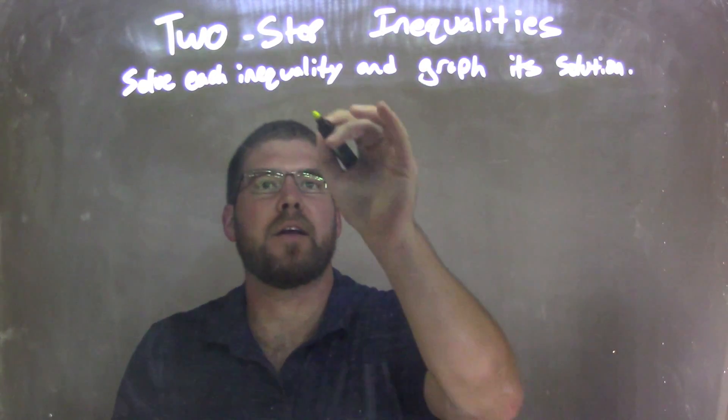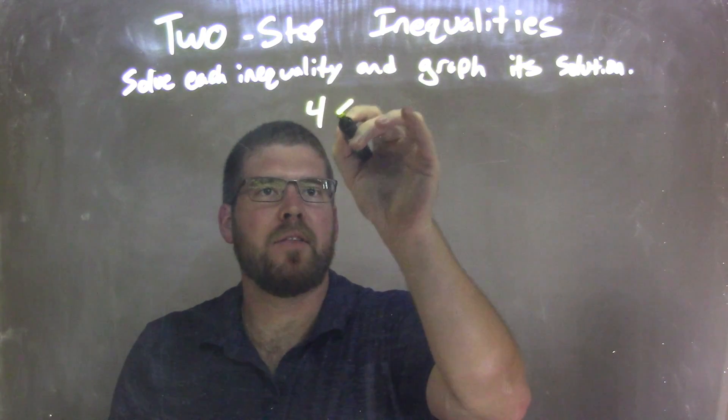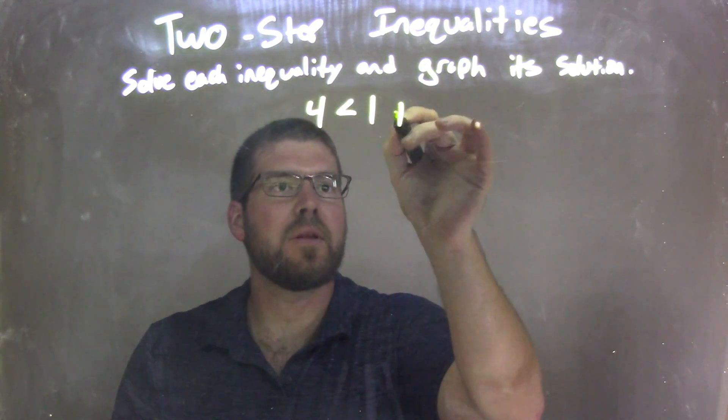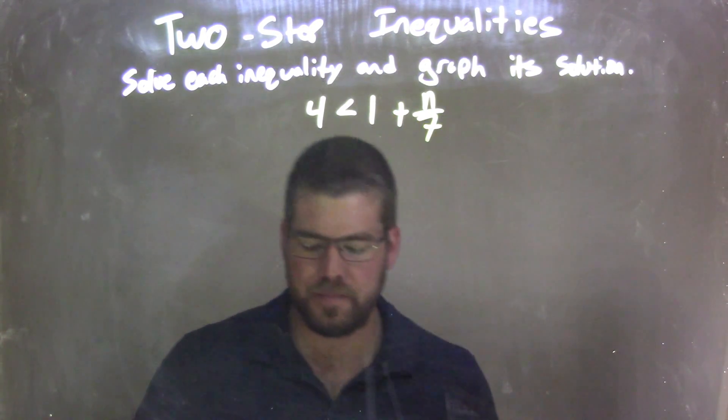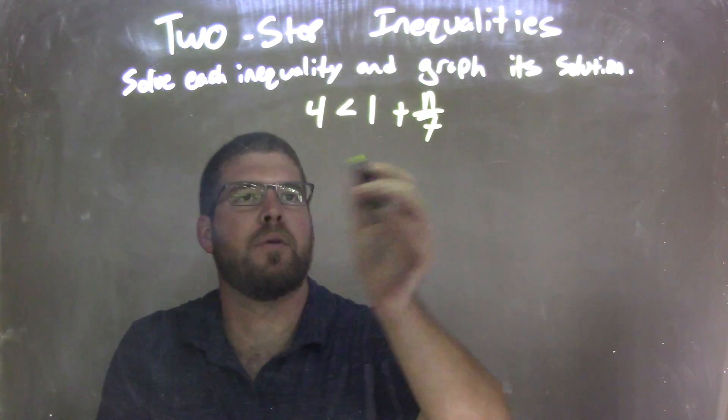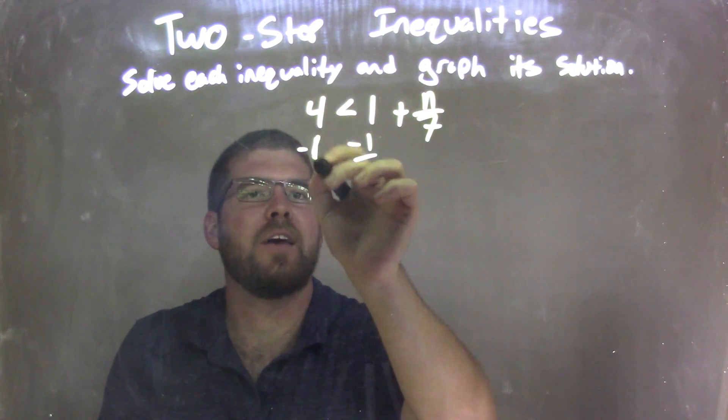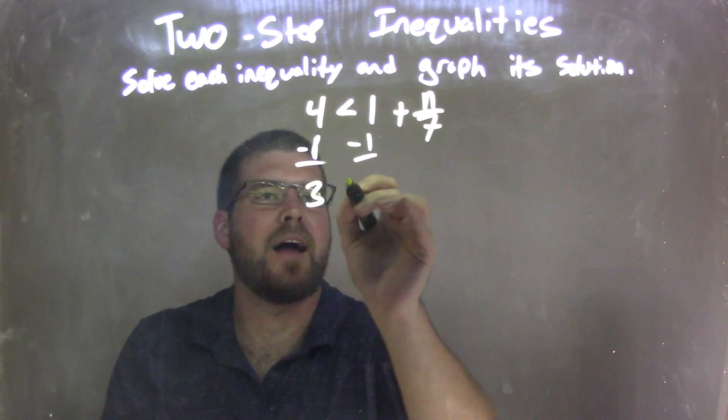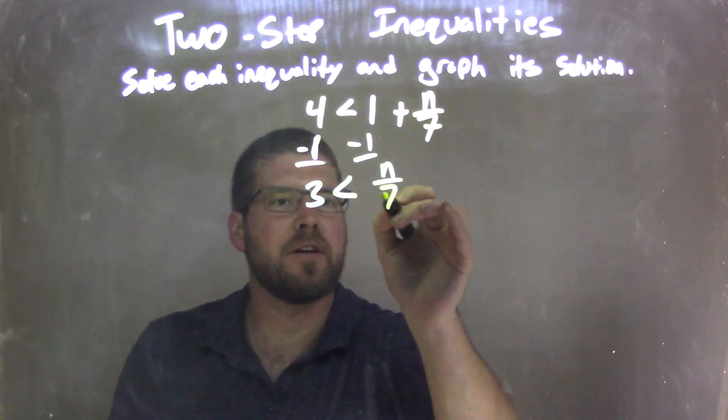So if I was given this inequality, 4 is less than 1 plus n over 7. Well, my first step here is I need to subtract 1 from both sides. So I'm subtracting 1 from both sides, which leaves me with a 3 on the left is less than n over 7.